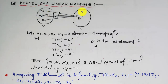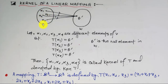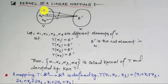Now, what is the kernel of a linear mapping? Suppose there exists a linear mapping T that maps V to W, meaning some elements of set V have images in set W. Here V is called the domain set and W is called the co-domain set. Among the elements of V, suppose alpha 1, alpha 2, alpha 3, alpha 4, etc.